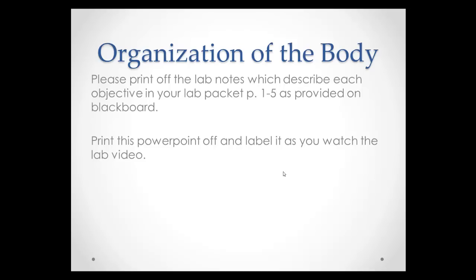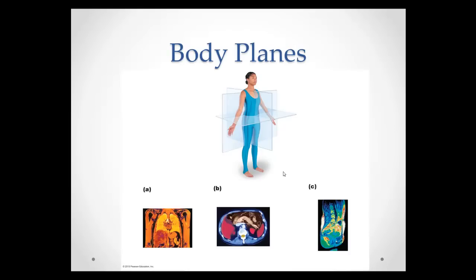Pages 1 through 3 in your lab packet should also be open so you can see the terms we're going to be covering and know the correct spelling of those terms. Objective number 1 asks you to describe and recognize anatomical position. Looking at the woman in this picture — also on page 18 of your textbook — she is in anatomical position, meaning her body is facing forward, her palms are facing forward, and her feet are facing forward.